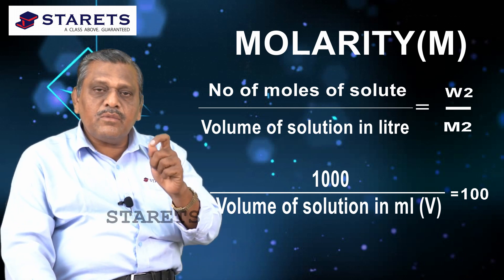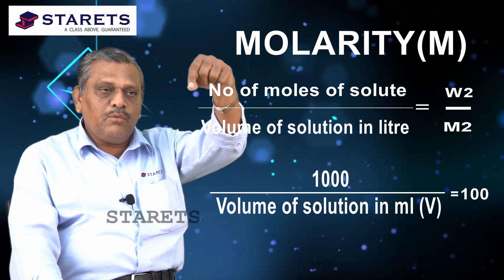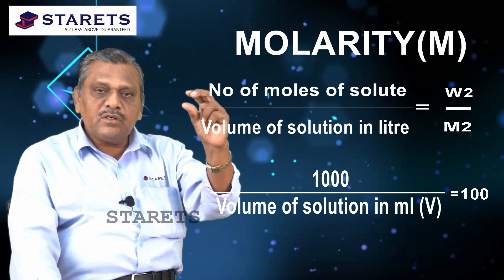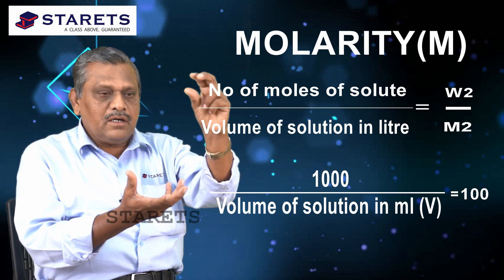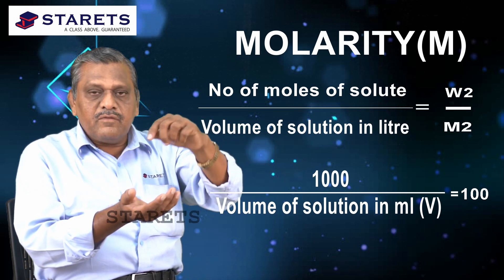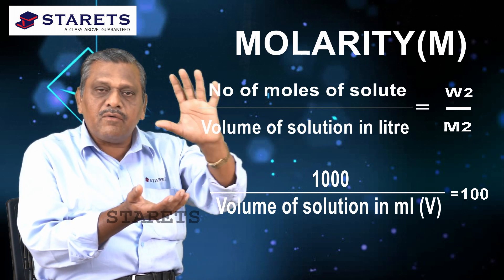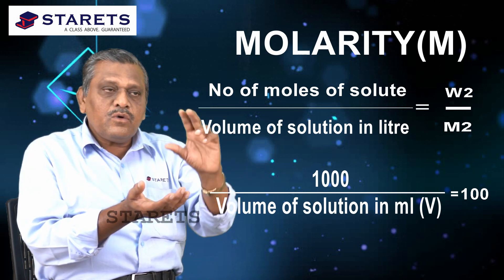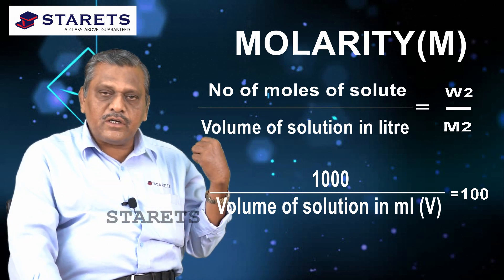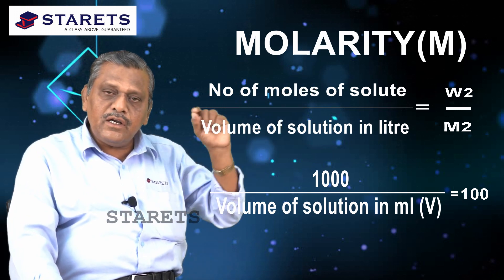For example, suppose you are preparing 100 ml of solution by dissolving W2 grams of solute. You take W2 grams of solute and dissolve it in solvent to form a solution. The number of moles of solute is W2 divided by M2, and this is called N2.